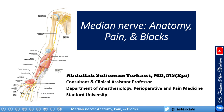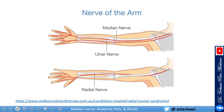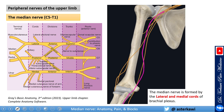We start with anatomy as usual. This is an important overview of the nerve course to show you how it travels mostly in the medial side of the arm, then closer to the midline, and then almost midline at the forearm.